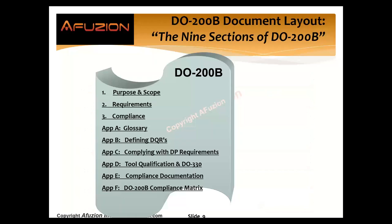DO-200B generally copies the format of the other DOs — DO-178, DO-278, etc. We start with purpose, scope, requirements, compliance, then appendices — it's mostly appendices. There's a glossary. We'll summarize the keywords here in our quick one-hour tutorial today.